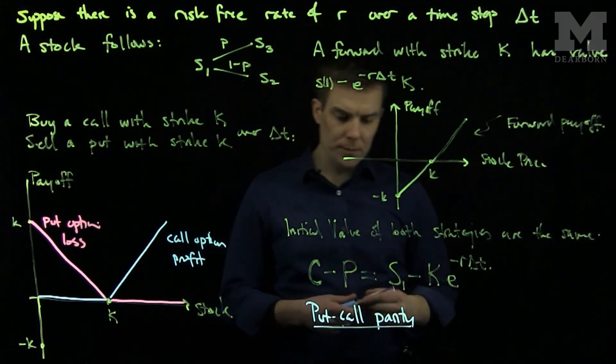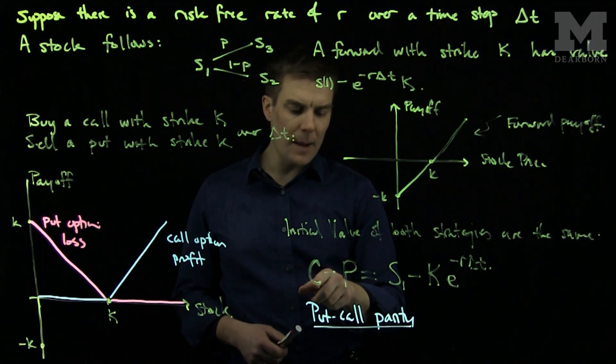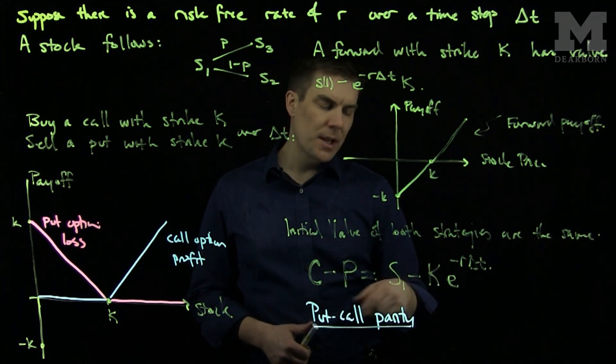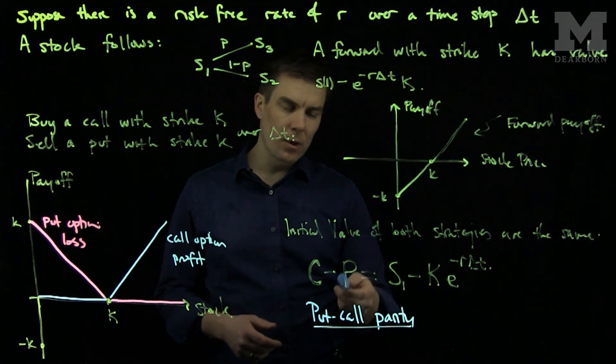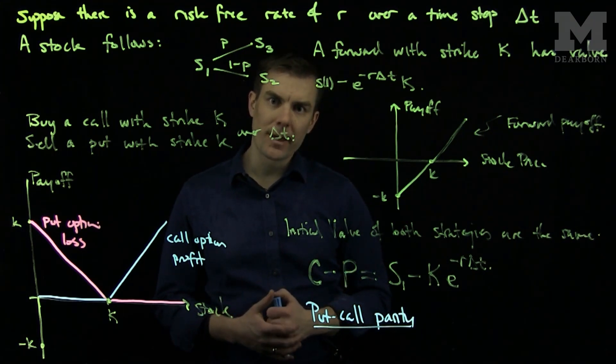Once we know the call option price, the initial stock price, and the continuous rate of return, we are able to find the put price or vice versa. Thank you very much.